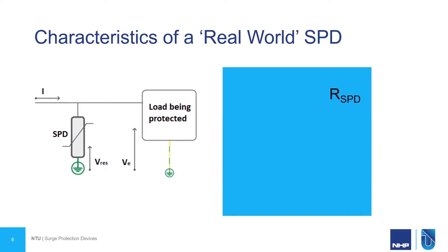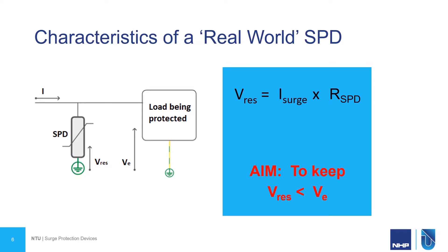However, unfortunately in the real world we have some limitations. Under high voltage conditions, the SPD will modify its impedance down to almost zero. However, there's no such thing as a perfect conductor, so there will be some resistance present. Combining that with surge current that's in the kiloamps, we'll be left with a residual voltage across the SPD. The aim of a surge protection device is to keep that residual voltage below the withstand of our protected load.